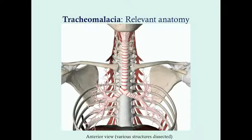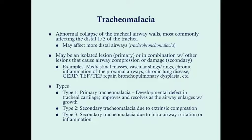Tracheomalacia is an abnormal collapse of the tracheal airway walls, most commonly affecting the distal one-third of the trachea. It can affect more distal airways, in which case we call it bronchomalacia, or if both are present, tracheobronchomalacia. It may be an isolated lesion — primary — or in combination with other lesions causing either airway compression resulting in wall collapse, or damage to the airway itself.